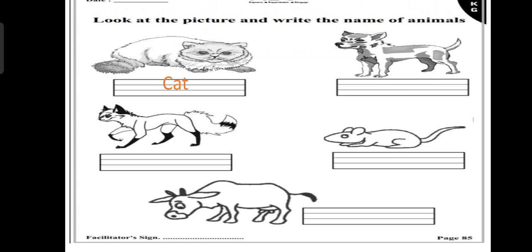Next is fox. Dog. D-O-G, dog. Then fox. F-O-X, fox.